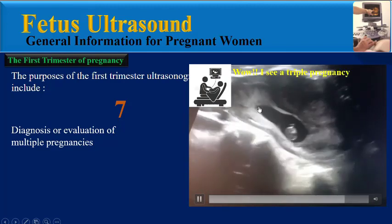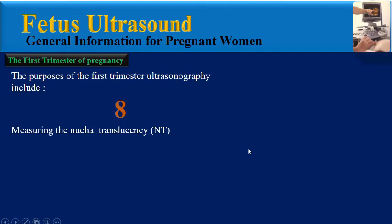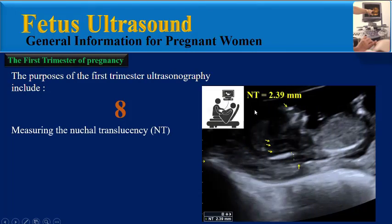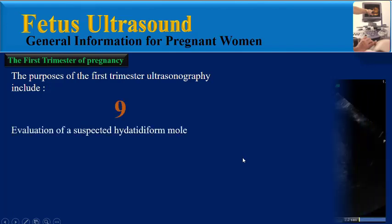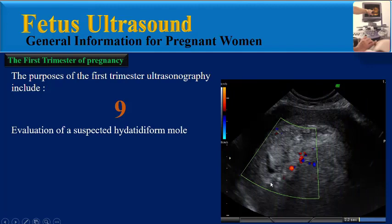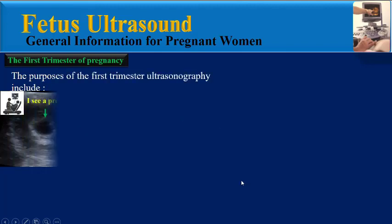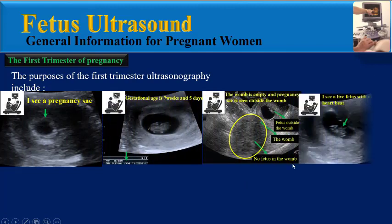The seventh purpose is the diagnosis or evaluation of multiple pregnancies, like this clip where we can see three pregnancy sacs in the womb with three live fetuses — the physician reports: I see a triple pregnancy. The eighth purpose is measuring the nuchal translucency, like this image where the physician reports: nuchal translucency is equal to 2.39 millimeters. The ninth purpose is evaluation of a suspected hydatidiform mole, like this image where the physician reports: there is no fetus but a hydatidiform mole is seen. In the following videos I will explain all these items in detail and completely.